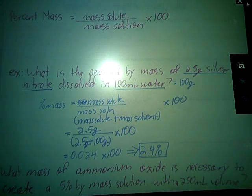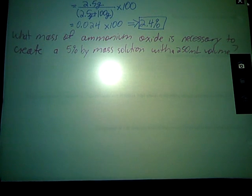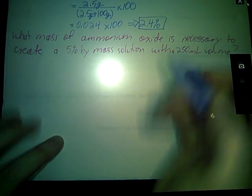What you might see more typically in a lab situation follows more like this second example. What mass of ammonium oxide is necessary to create a 5% by mass solution with a volume of 250 mL? So I want to end up with a 250 milliliters volume of solution. And I want to know how much ammonium oxide will I have to weigh out, mass out on my balance in order to create the solution.